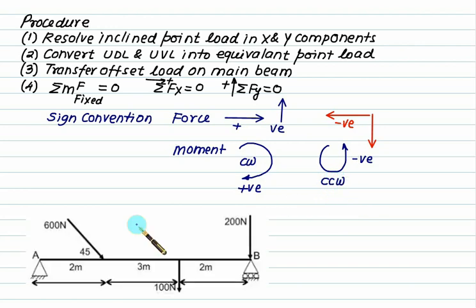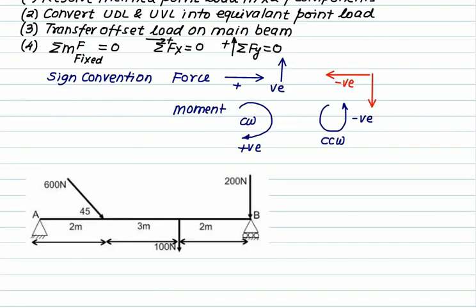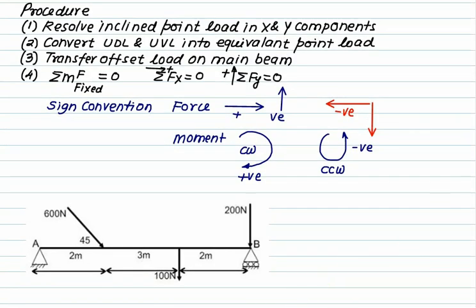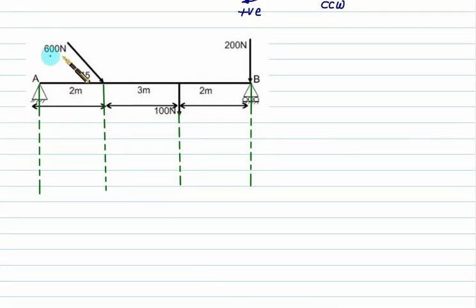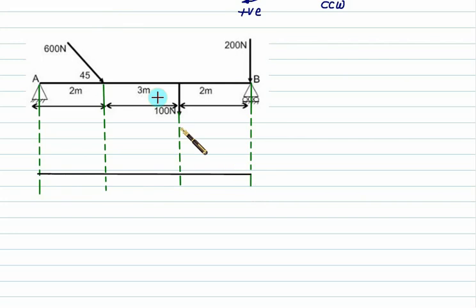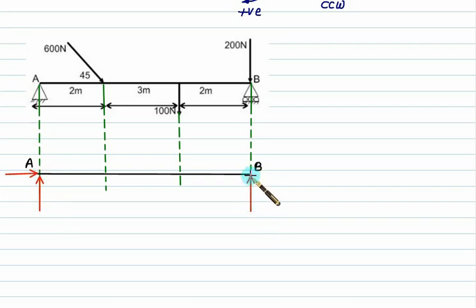Let's practice a question. In this figure, all loads are point loads — 600 N is an inclined load and the other two are vertical loads. First, resolve the 600 N load into x and y components. We have a fixed support at A and a roller support at B. We show two reactions at the fixed support: Ax and Ay. For the roller, the reaction is vertical at B, called By.